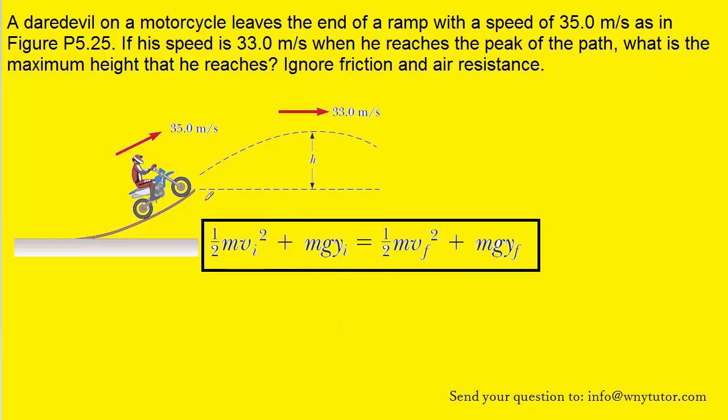Before evaluating which types of energy are present initially and finally, it's useful to define this horizontal dotted line as having a height equal to zero. With that definition in mind, we could see that initially the motorcyclist would have no gravitational potential energy because he is not yet off of the line that we called ground level, essentially. So we can cancel out the initial gravitational potential energy.